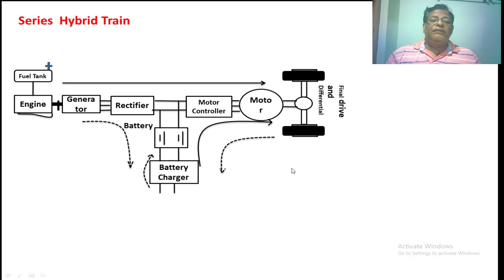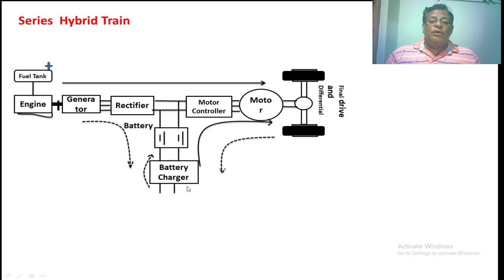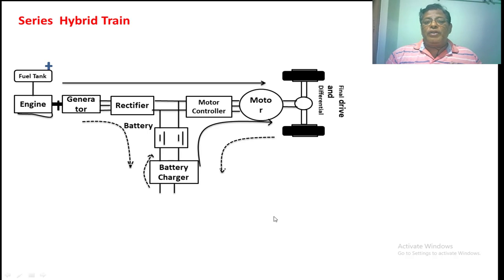Now we are going to see the different modes of operation. In the first mode, the IC engine alone gives propulsion power to the vehicle, and the battery neither gives nor receives electrical power. In the second mode, only the battery gives power to the motor, which provides propulsion; the IC engine is not active. In the third mode — hybrid mode — when the vehicle is going uphill it requires a high amount of power, which is taken from both the IC engine and the battery.